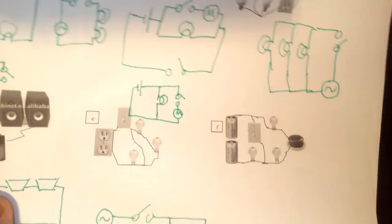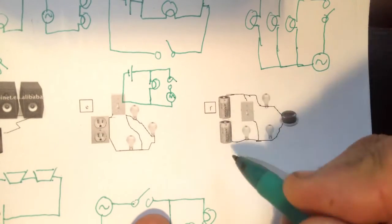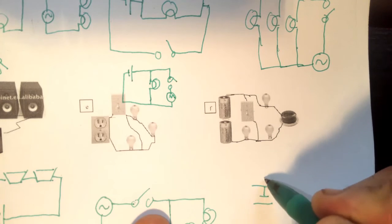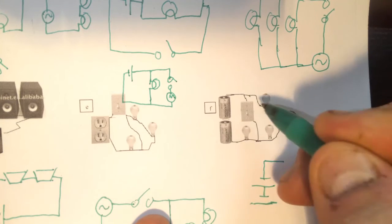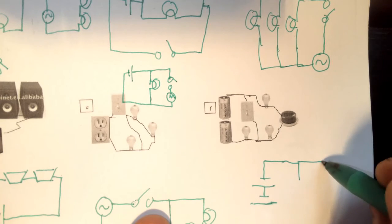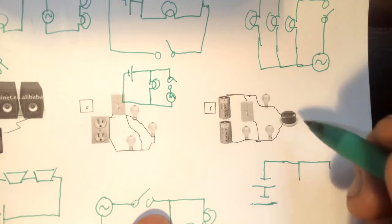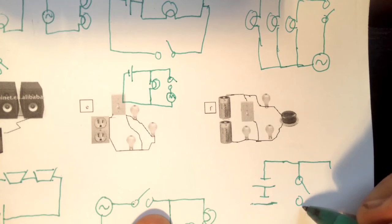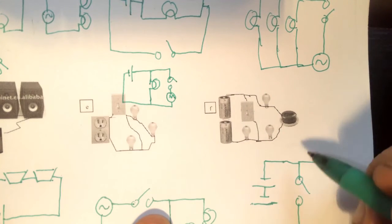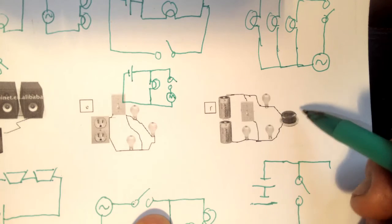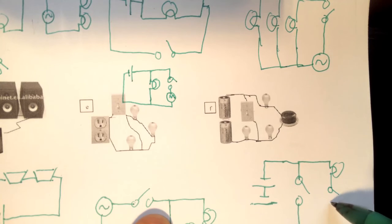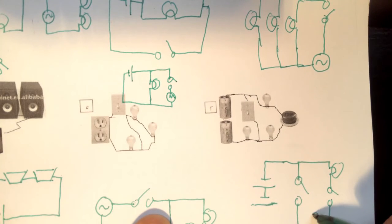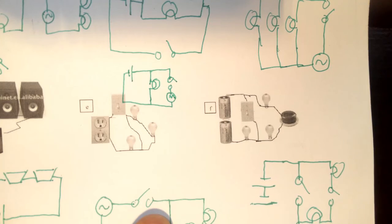Letter F. Two batteries in series. And then a branch. On the middle branch we just have a switch. On the other branch we have a light bulb switch and then another light bulb. And then after they come together we have a light bulb.